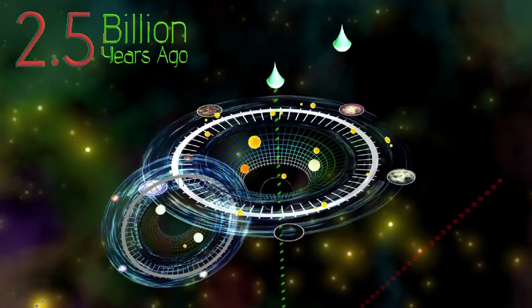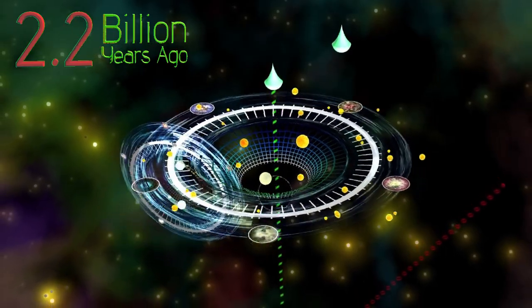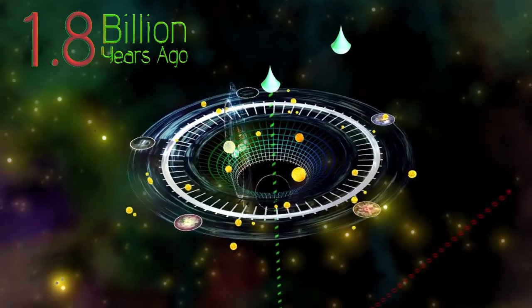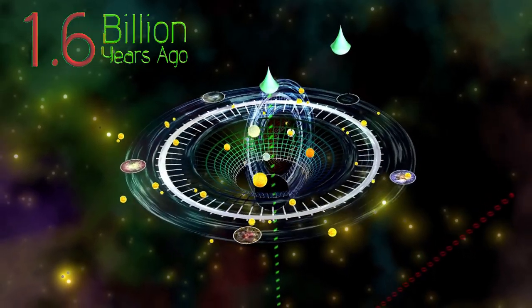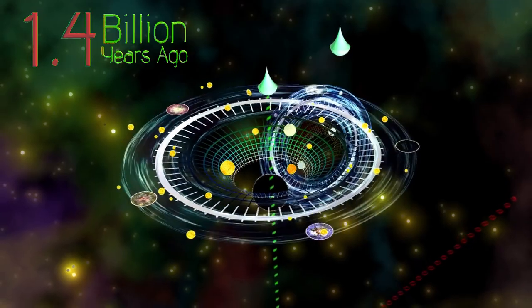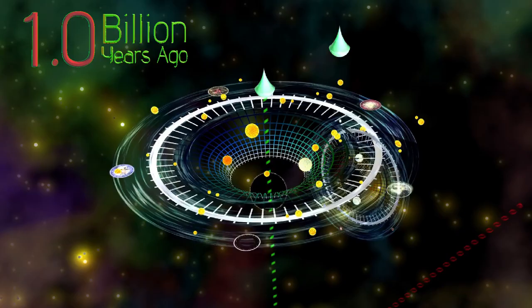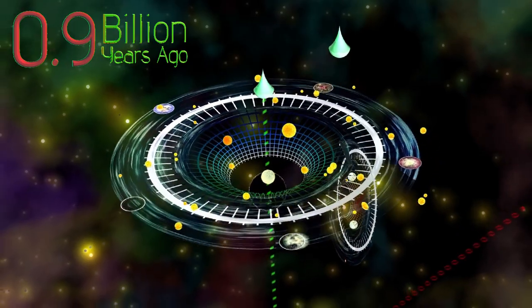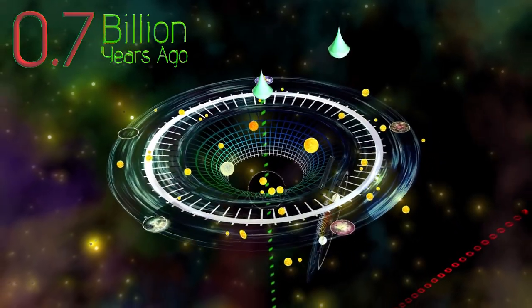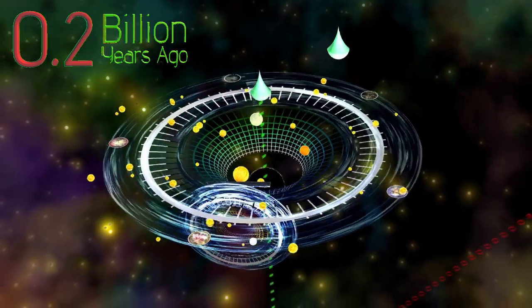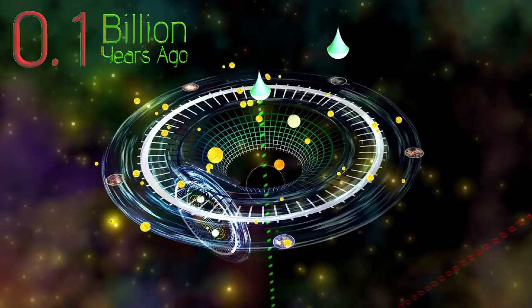For around 8 billion years, the second galaxy sacrifices its outer matter, a bit like an orange being slowly peeled bare. Around a billion years ago, the process finally completes. There's nothing left to keep the black holes apart. The Milky Way is about to enter into the mature stage of its life.